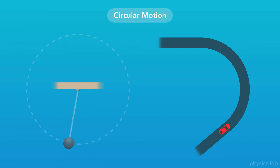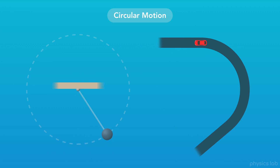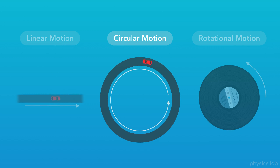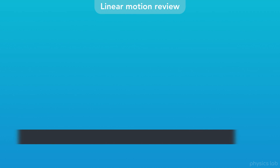Even if an object doesn't complete a full circle, it's still in circular motion if the shape of its path is a circle. It turns out that the tangential description of circular motion is similar to linear motion, so let's do a quick review of linear motion.